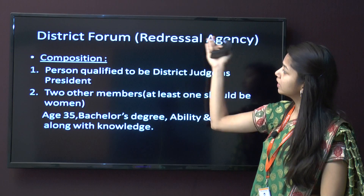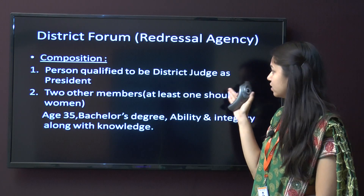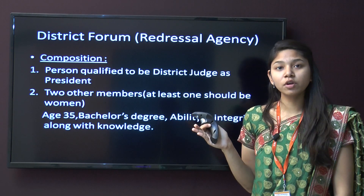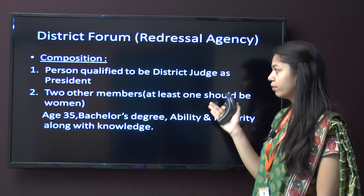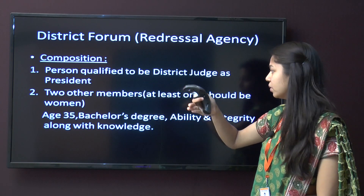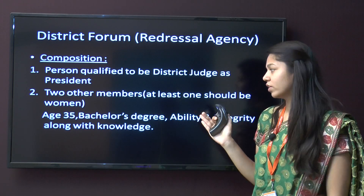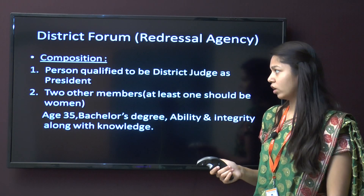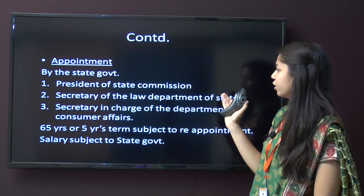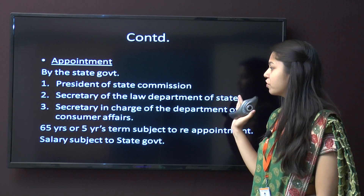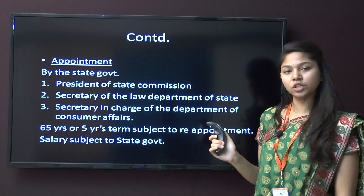District Forum Redressal Agency composition: a person qualified to be a district judge acts as president. There are two other members, at least one of whom should be a woman. The two members must be aged 35, hold a bachelor's degree, and have ability, integrity and knowledge. Appointment is done by the state government, involving the president of the state commission, the secretary of the law department of the state, and the secretary in charge of the department of consumer affairs. The term is 65 years of age or 5 years, subject to reappointment, and salary is subject to the state government.